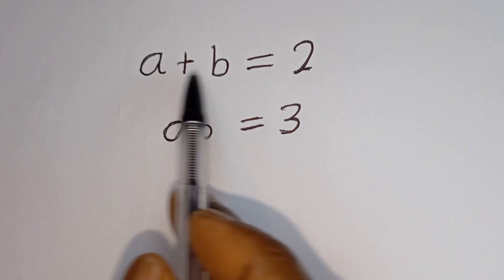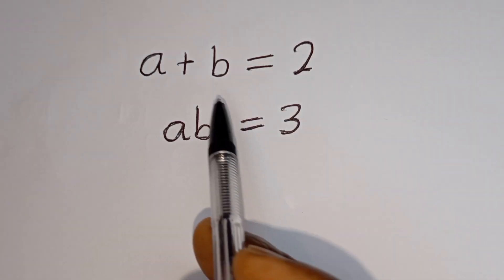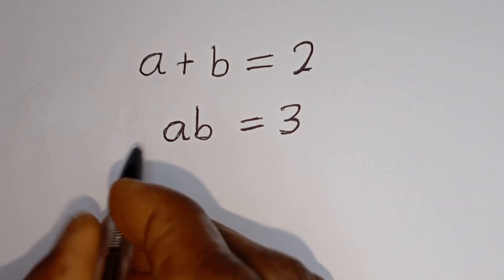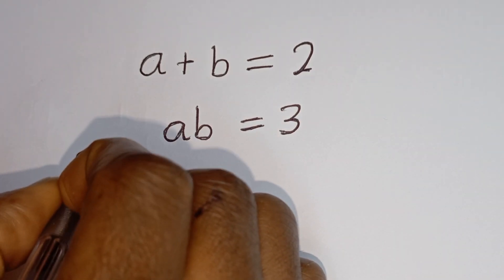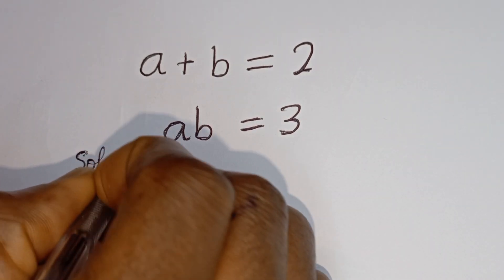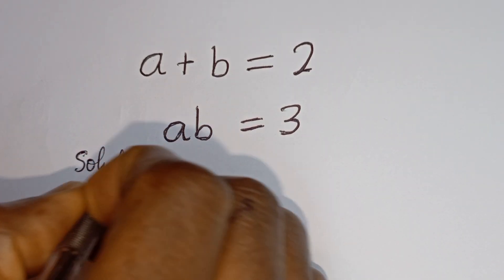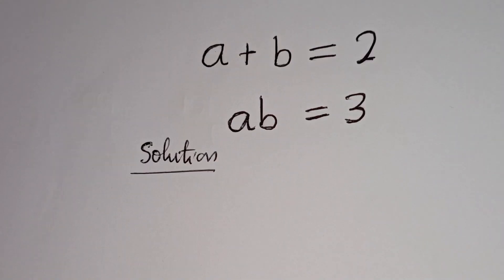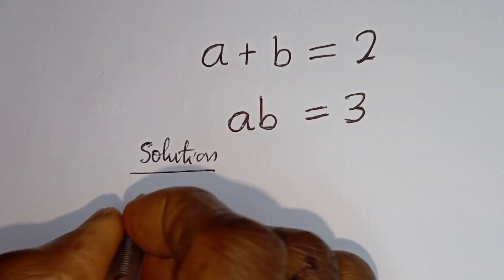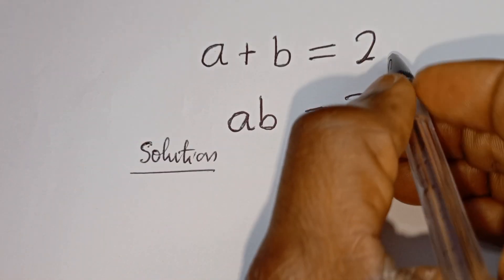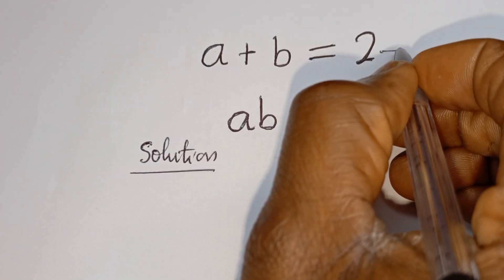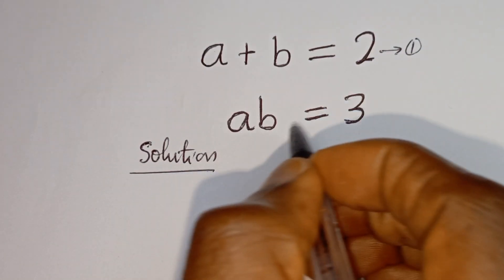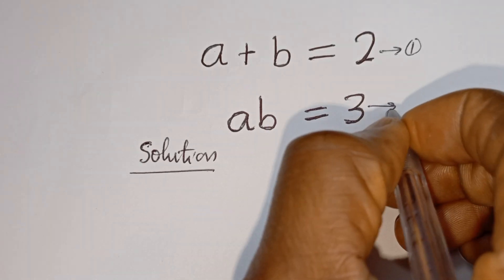Hello. How to solve for A and B in this equation? A plus B is equal to 2 — let's call this equation 1. AB is equal to 3 — let's call this equation 2.